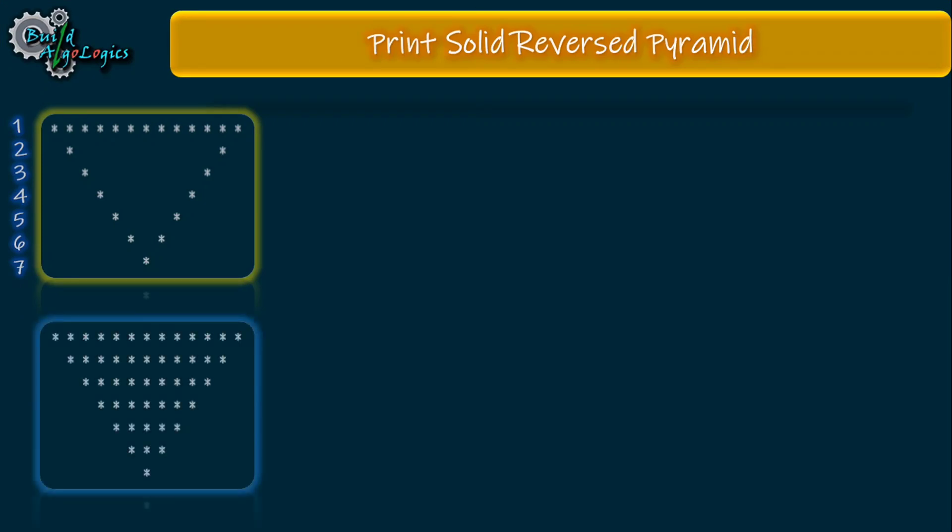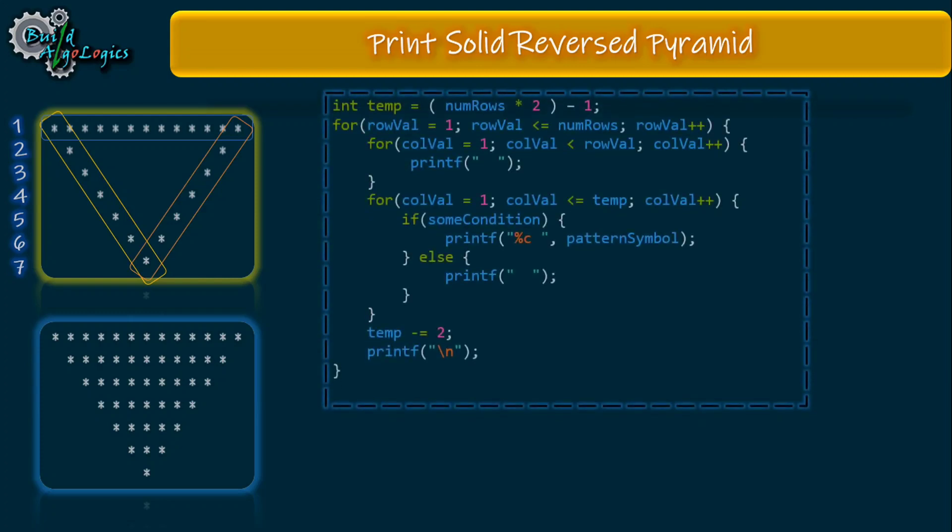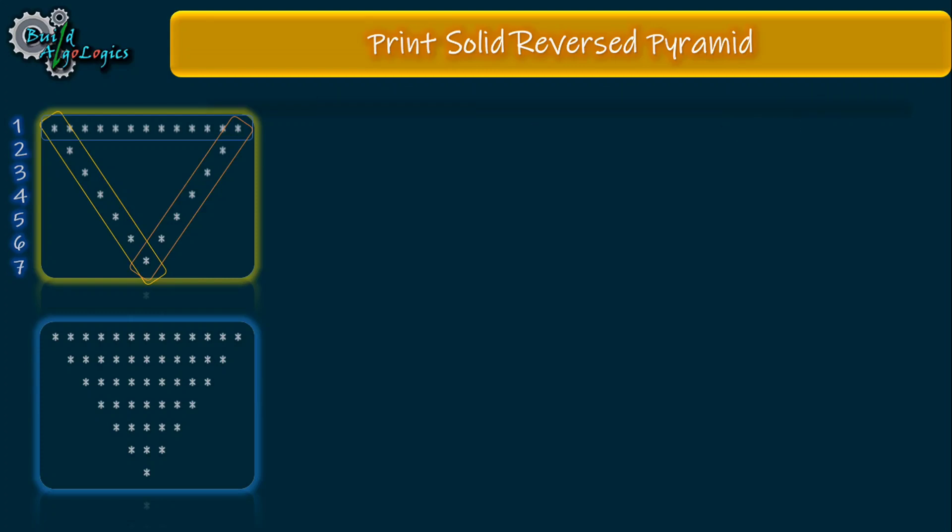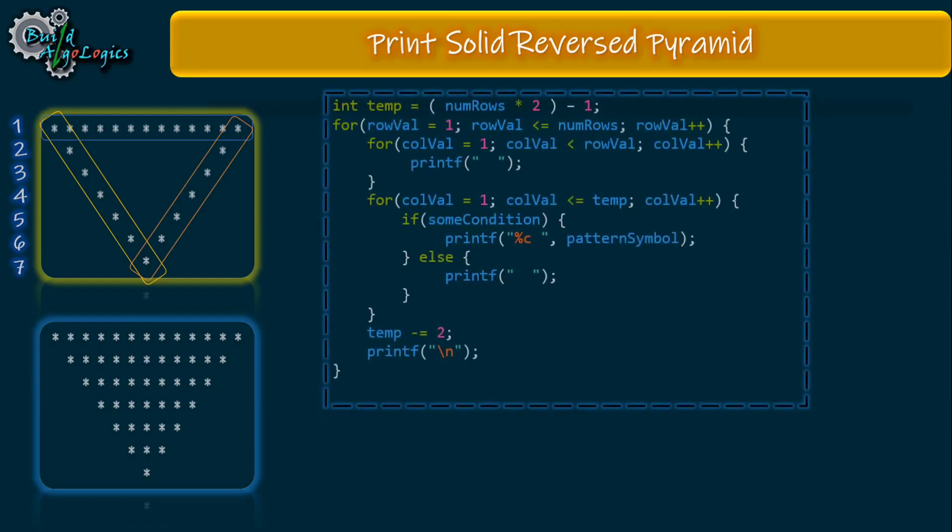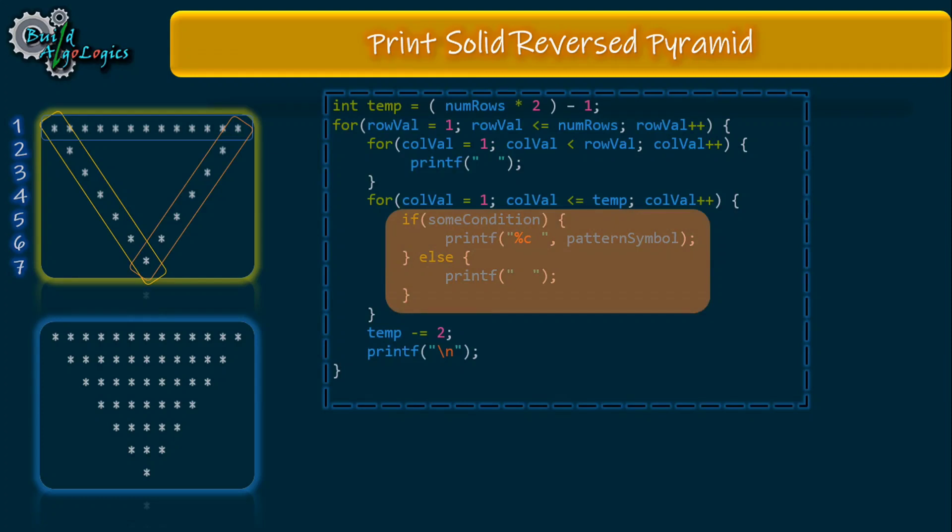This pattern is like the previous one, but here we just need to print stars in these parts only, and for the rest of the values we print white spaces. For this purpose we can use one if-else block. When some conditions are true, print stars or pattern symbols, otherwise print white spaces. For printing this part, we know that each time this loop is starting from one. So we can derive our first condition: print stars when column value is one. Similarly, we're ending with this temp value, so our second condition will look something like this.